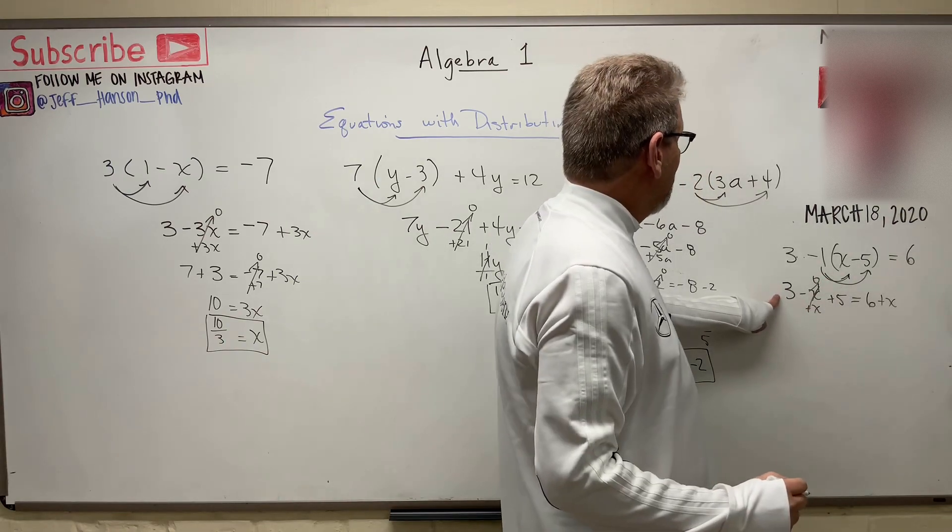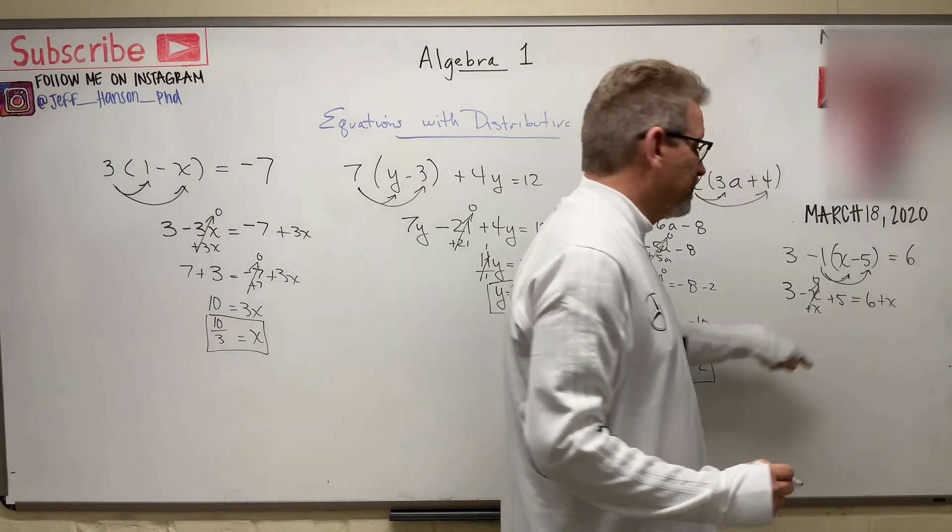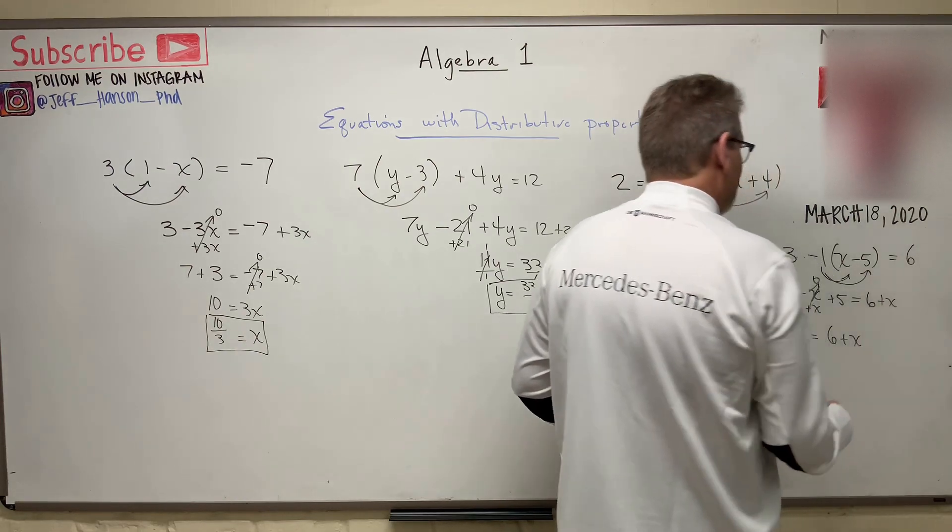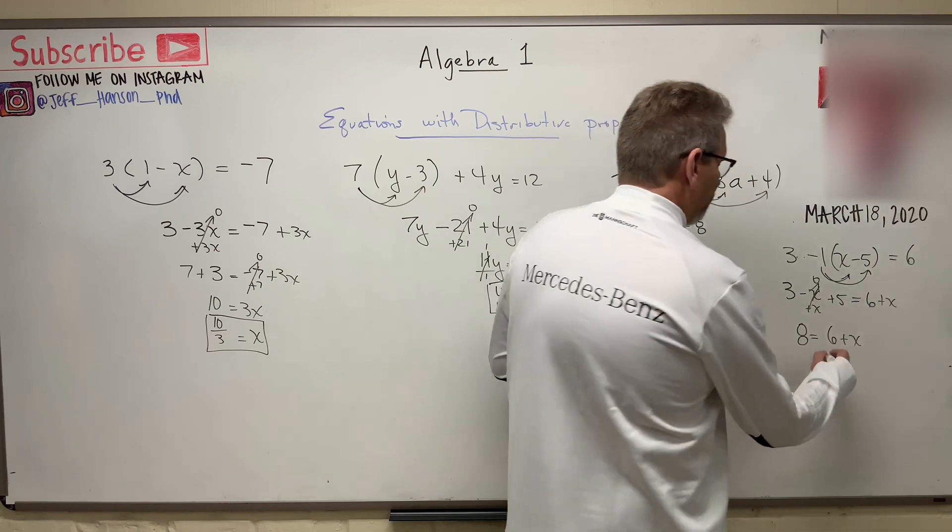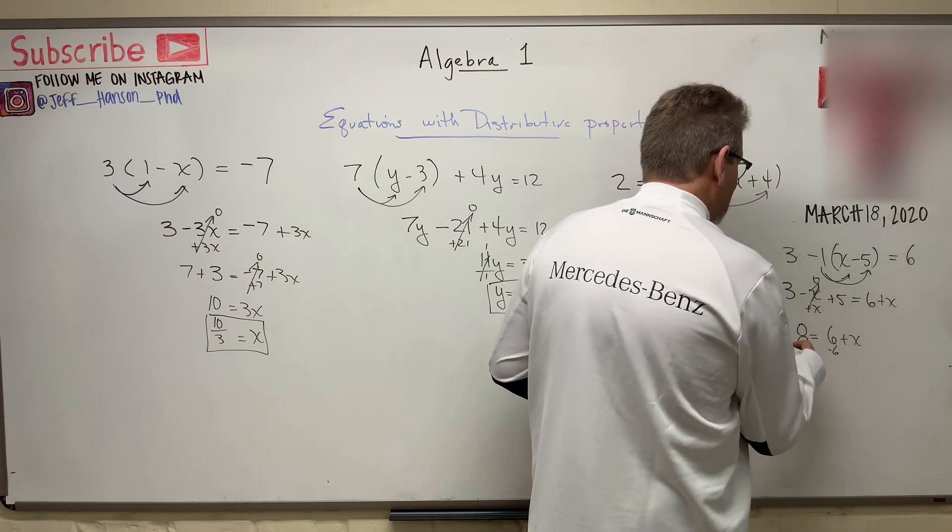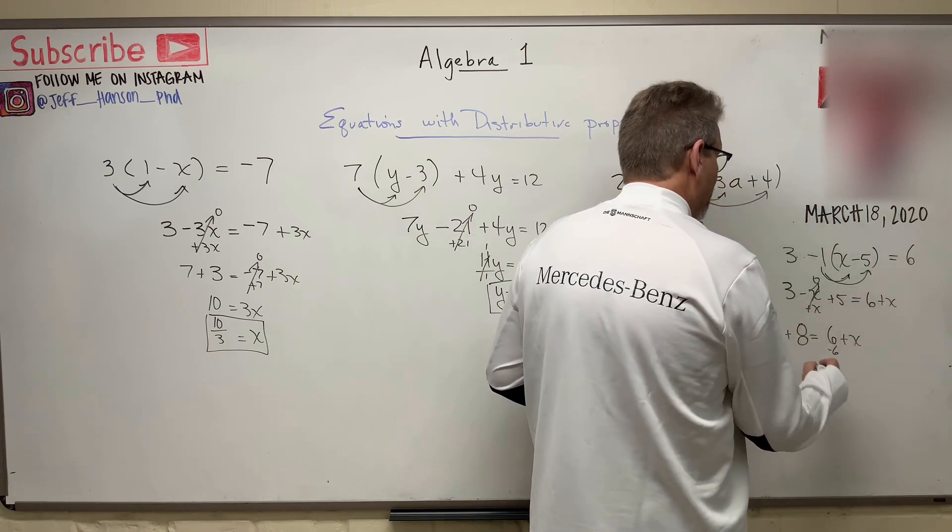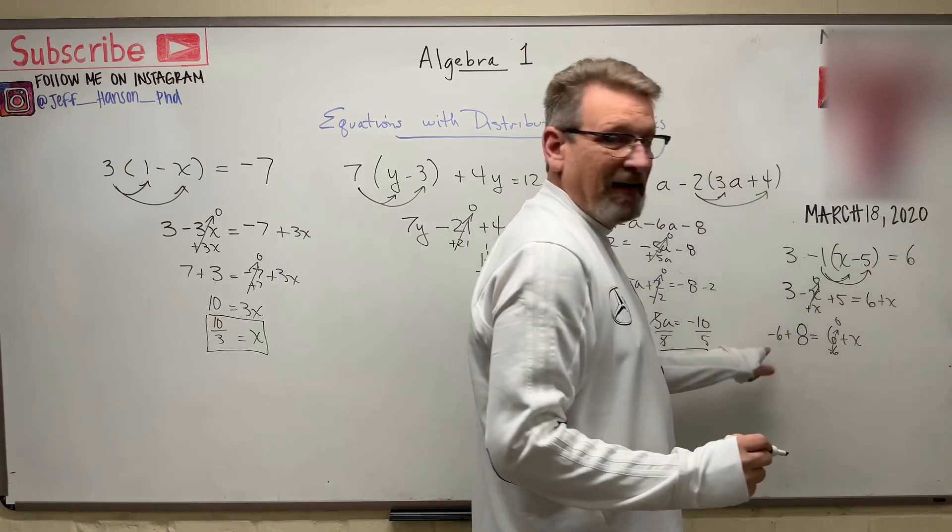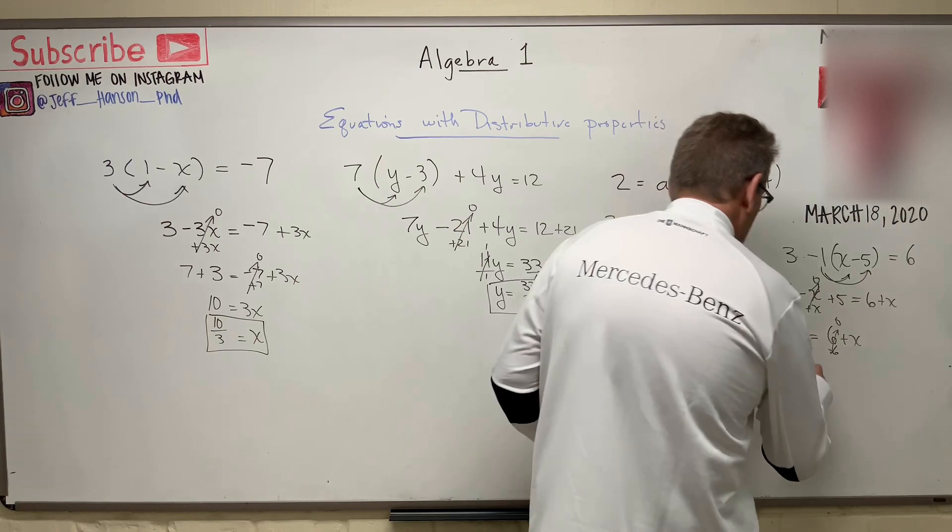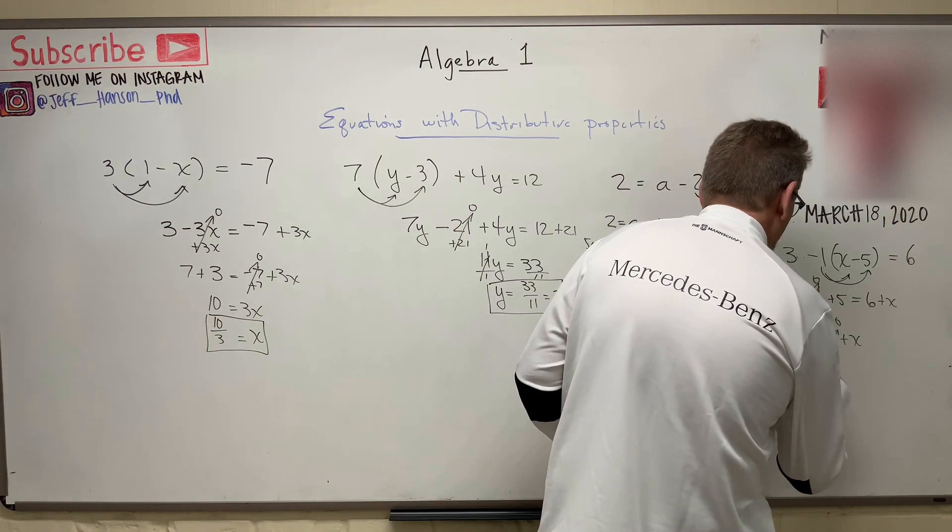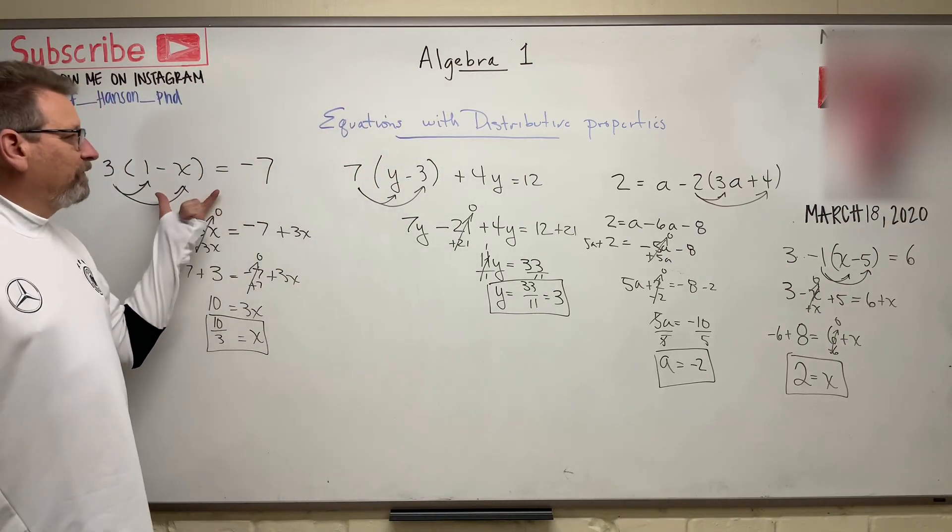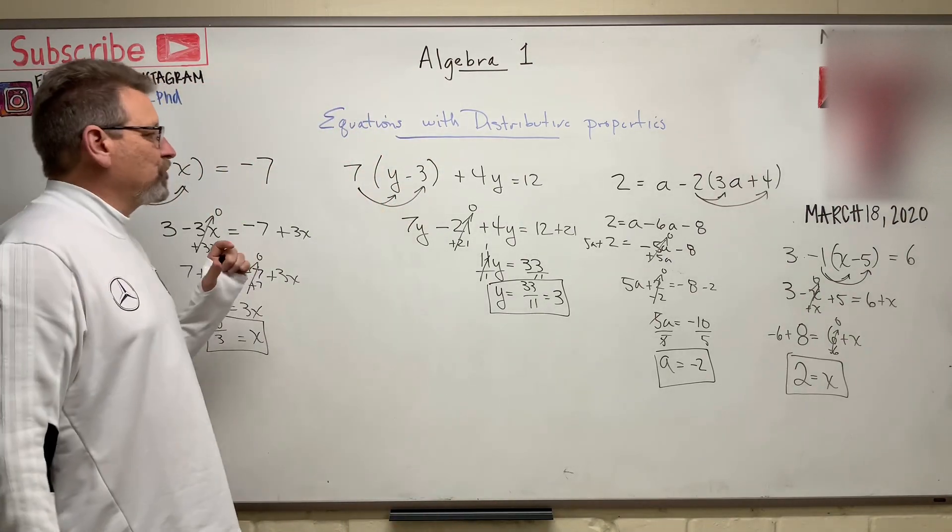So 3 plus 5 is how much? 8 is equal to 6 plus x. And to get the x all by itself, we just need to subtract 6 from each side. So that goes to 0. And 8 minus 6 is 2. All right, are you getting the hang of this? We've done a lot of these equation solvers, but this one had distributive property in it.